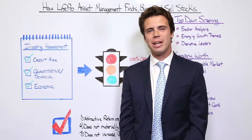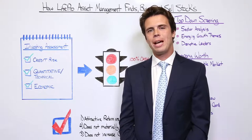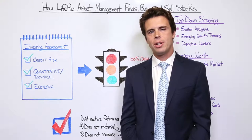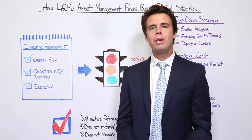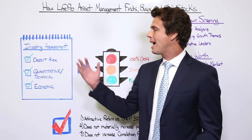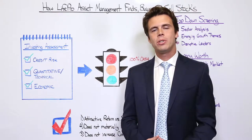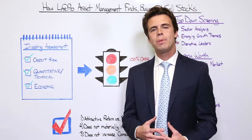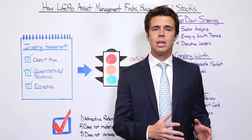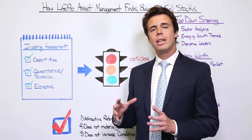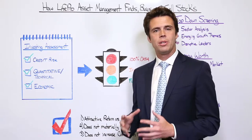Hi, my name is Robert Rayburn and today we're going to be going over the LifePro Asset Management stock selection process. In a previous episode we went over our tactical risk indicators and how we use those risk indicators to determine whether we want to focus client portfolios in stocks or in more defensive areas of the market such as bonds and cash.